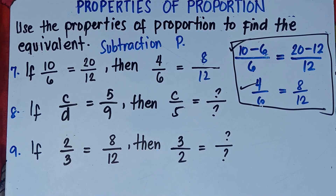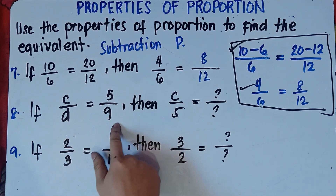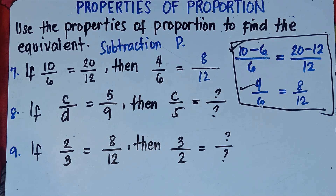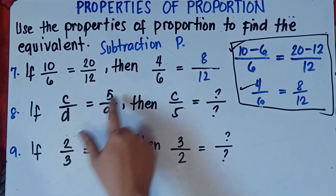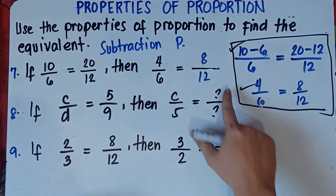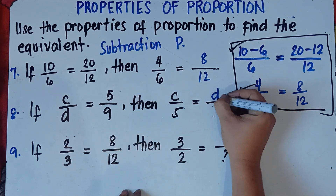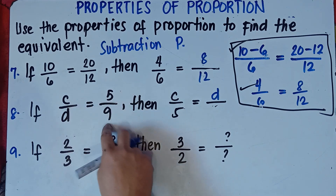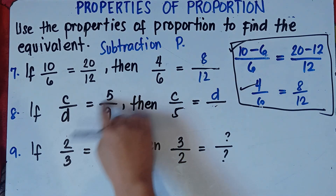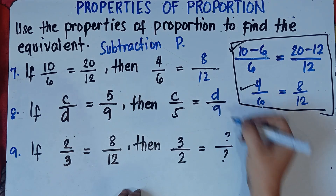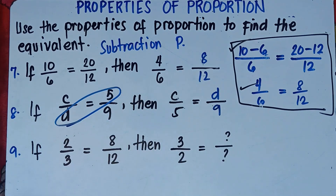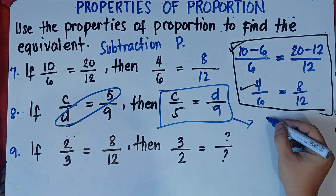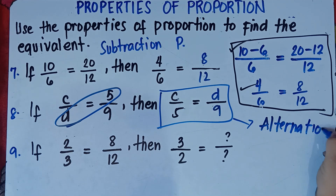Number 8: if C over D equals 5 over 9, then C over 5 equals blank over blank. The 5 becomes the denominator of C, so the means have been interchanged. We apply the alternation property. Interchange the means — D and 5 — and copy the extremes C and 9. So the answer is D over 9. The property is alternation property.